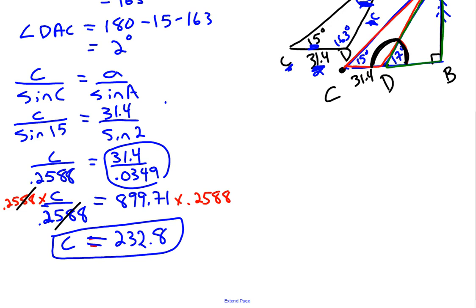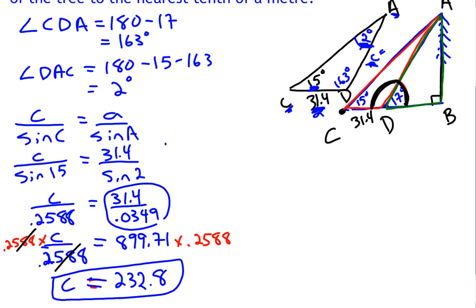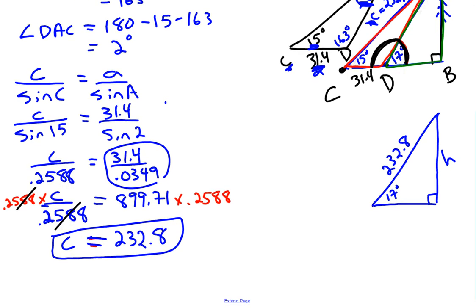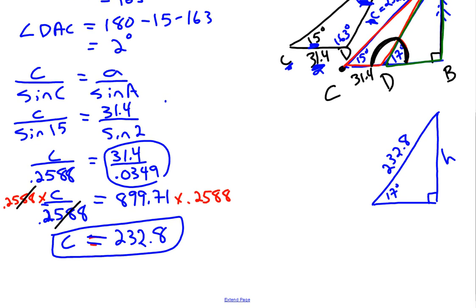So we just found C. Remember that C was this distance up here of 232.8. My diagram is getting really crowded so I'm going to take apart the pieces of the diagram that we need. We just calculated the hypotenuse in this triangle here with a 17 degree angle as 232.8. And we're trying to find the height.